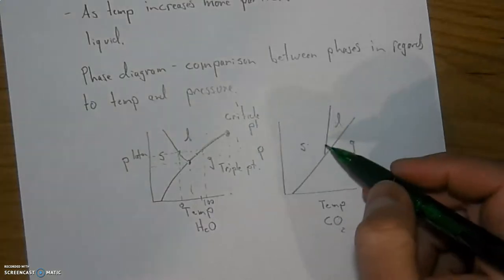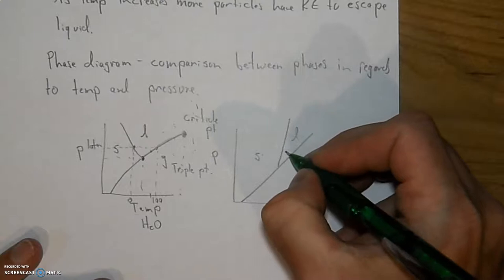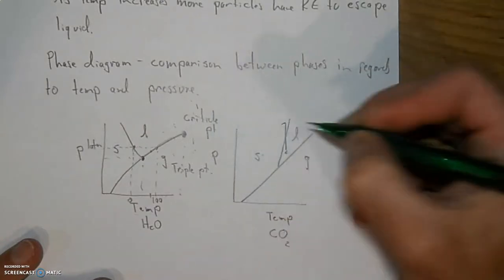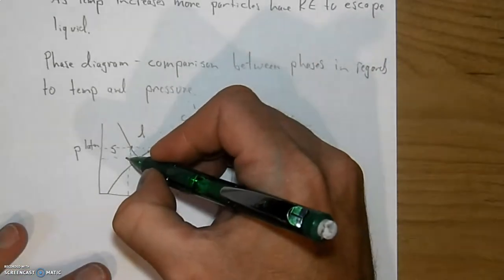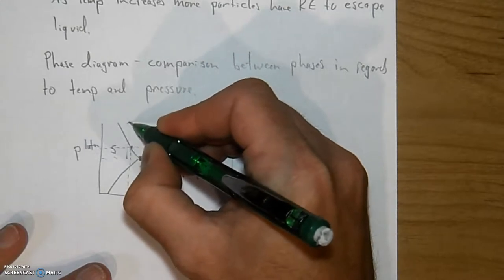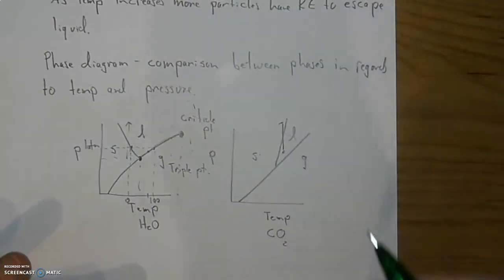And again, everything else typically is going to have this scenario here, where if I'm in a liquid state and I apply pressure, I can force something into the solid state. Water is just the opposite. If you apply pressure to water from the solid state, you actually melt it. Think ice skates. Ice skates do that. And that's the end of that.